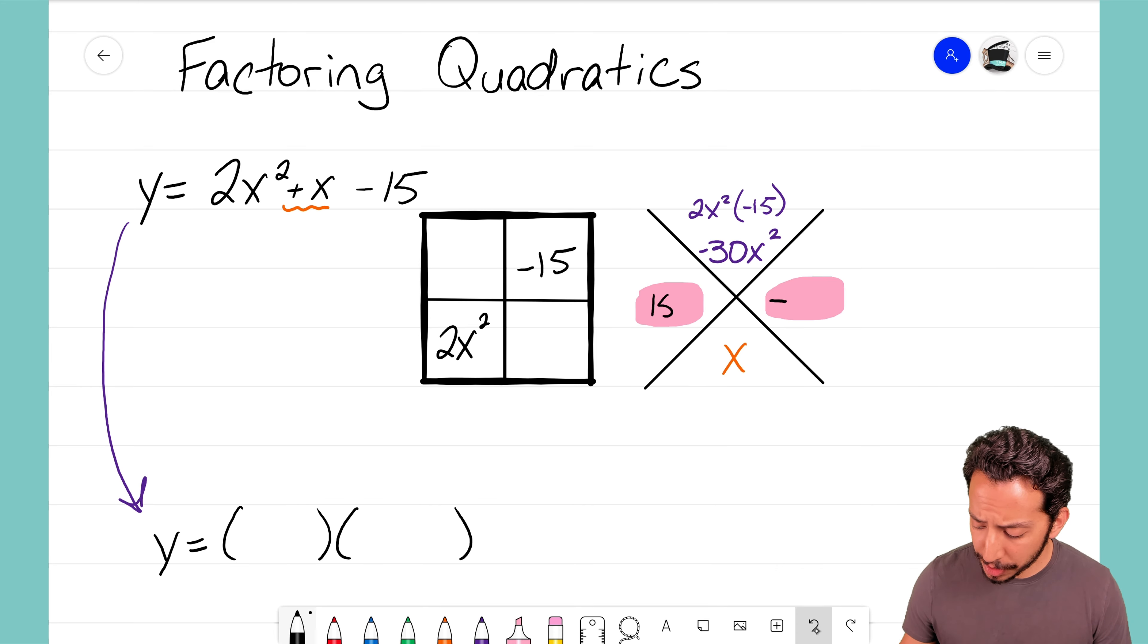As I think through some other factors you might be thinking of 10x and negative 3x. Again 10x and negative 3x multiply to make negative 30x squared but 10x plus negative 3x we end up with 7x's. Not the single x that we're looking for. So I know those factors also don't work.